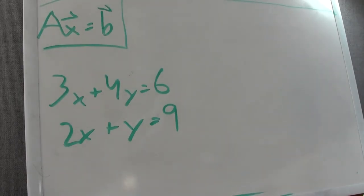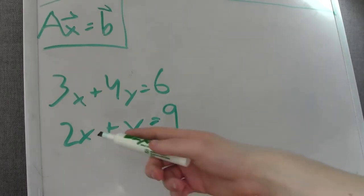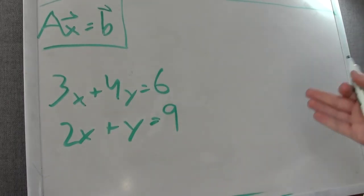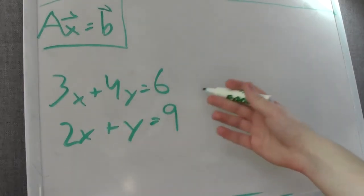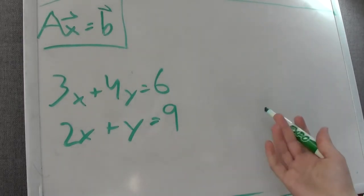Linear algebra, as the name implies, is just about lines—lines in the format x, y, z, a, b, c, whatever you have. Lines in this format: 3x plus 4y equals 6, 2x plus y equals 9. But linear algebra wants to work with lots of lines, lots and lots of lines.